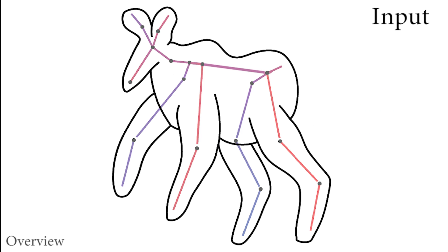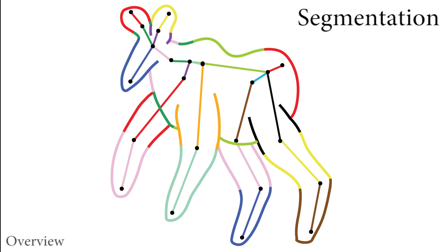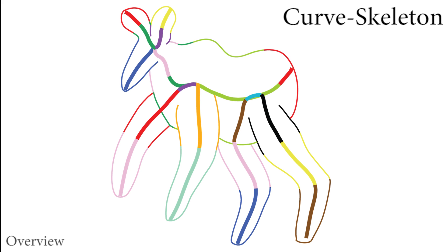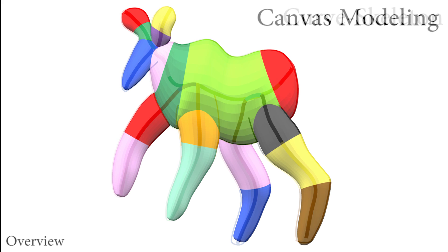To use our body part shape prior, we first segment the input 2D contours into individual body part outlines corresponding to 3D skeletal bones. We then use this segmentation to compute the canvas geometry.